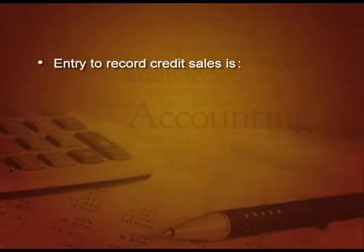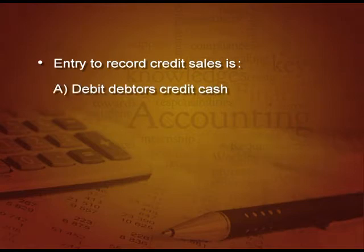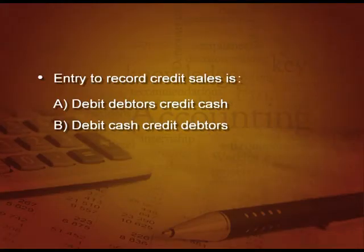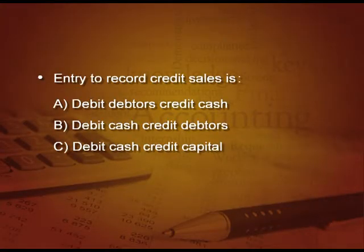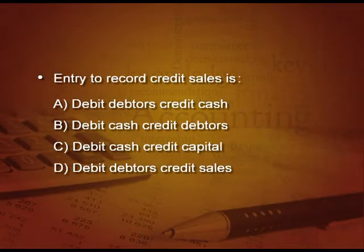Next question: the entry to record the credit sale is — A) Debit debtor credit cash, B) Debit cash credit debtors, C) Debit cash credit capital, and D) Debit debtors and credit sales. The answer is D, because when we make a sales entry, it is party account debit to sales.